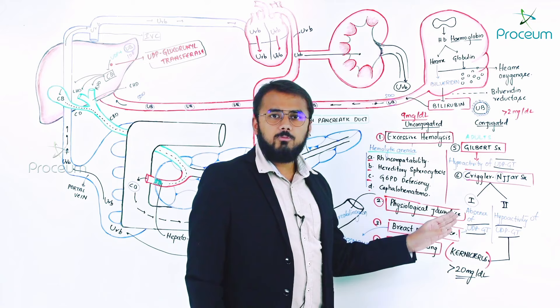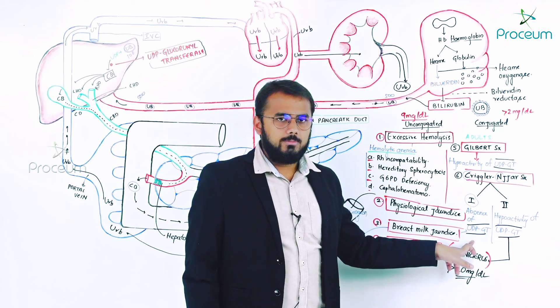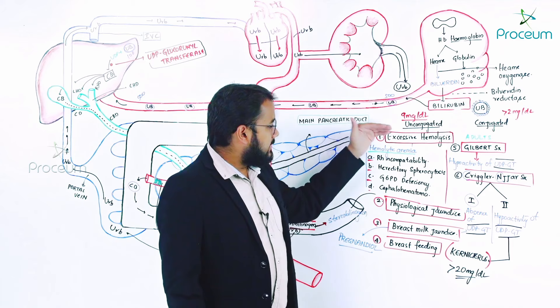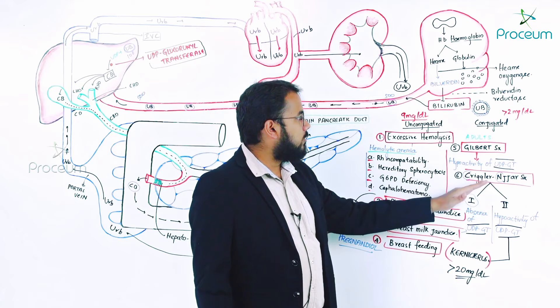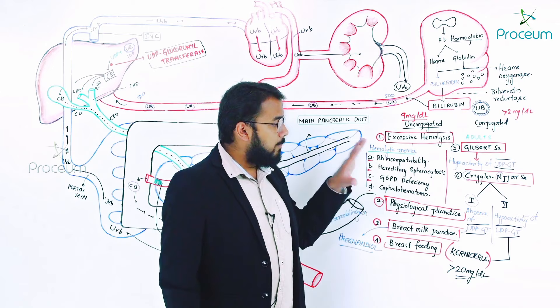In CN type 1, with complete absence of UDP glucuronosyltransferase, these children will die — no matter what you do. CN type 1 has a very bad prognosis. The six most important causes of unconjugated hyperbilirubinemia are: excessive hemolysis, physiological jaundice, breast milk jaundice, breast feeding jaundice, Gilbert syndrome, and Crigler-Najjar syndrome.